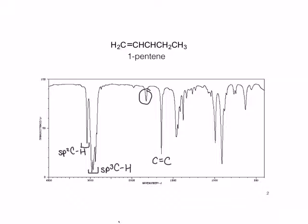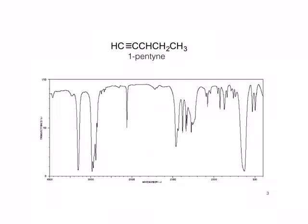Next, let's look at the spectrum for one pentyne, which contains a carbon-carbon triple bond. Again, you should see some differences. Although we still have the SP3 carbon-hydrogen stretches, we have lost the SP2 carbon-hydrogen stretches we saw in one pentene, but we've gained the SP carbon-hydrogen stretches of the triple bond. We also lost the carbon-carbon double bond stretch and gained the carbon-carbon triple bond stretch at about 2100 wavenumbers.